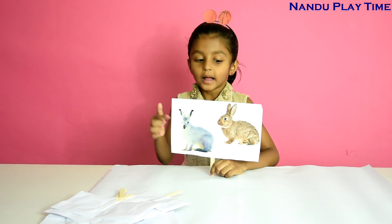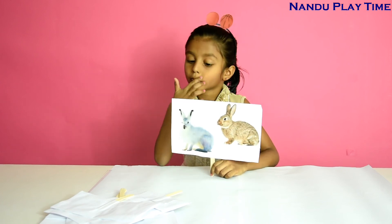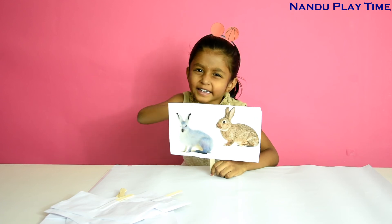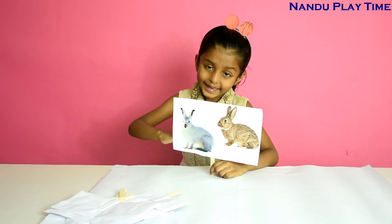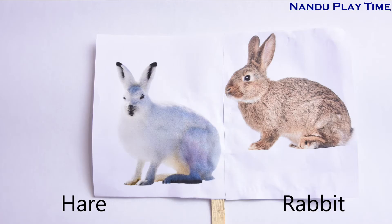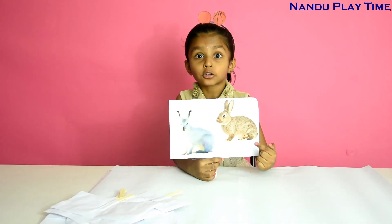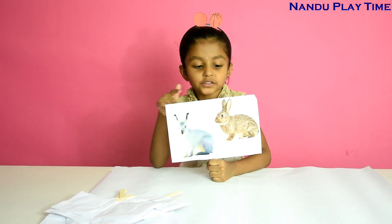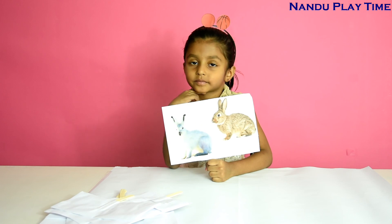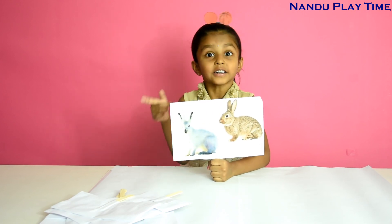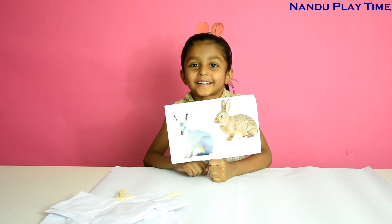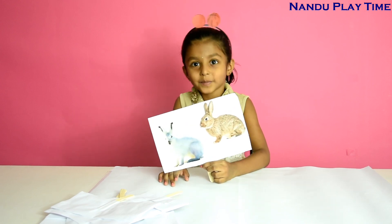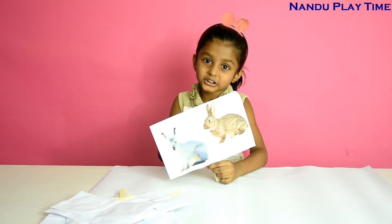This is rabbit, this is hare. Rabbit has shorter feet and ears, but hare has long feet and ears. Hare lives most of the time alone, but rabbit lives in groups. Hare runs faster than rabbit — that's why we have the hare and tortoise story, not the rabbit and tortoise story. That's all for today. If you like this video, please subscribe. Thanks for watching, bye bye!